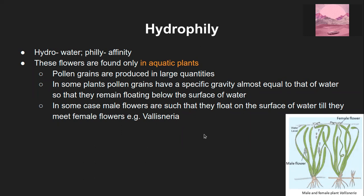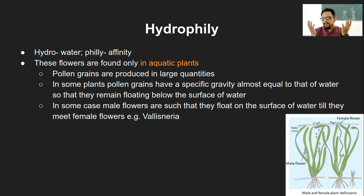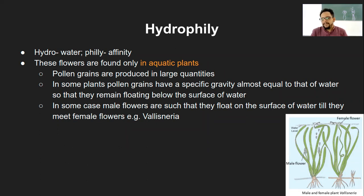A student asked about specific gravity equal to that of water. The teacher explained: when the density of two materials is the same, they tend to occupy the same position. Surface tension acts on the pollen grains and keeps them floating at the top of the water surface where the flowers are located. Specific gravity here refers to the density of pollen grains, where the combined effect of gravity and surface tension keeps them at the water surface.